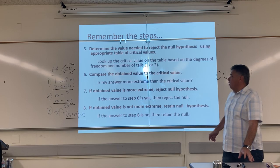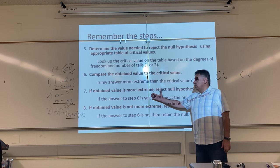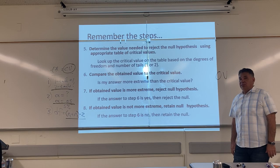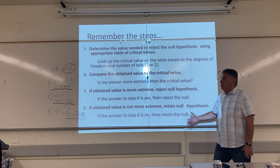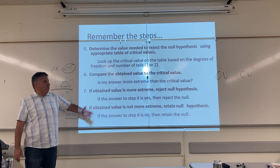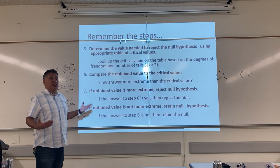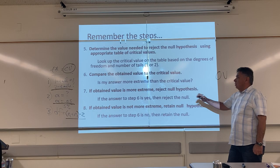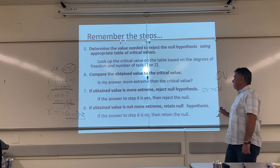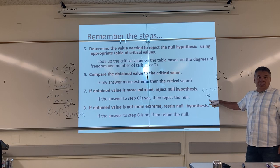Step six: compare them. Put the OV next to the CV. If the OV is more extreme than the CV — if the OV is bigger — the results are significant and you're going to reject the null hypothesis. But if the obtained value is not more extreme, then you're going to retain the null hypothesis and continue to believe there's no difference among the groups.